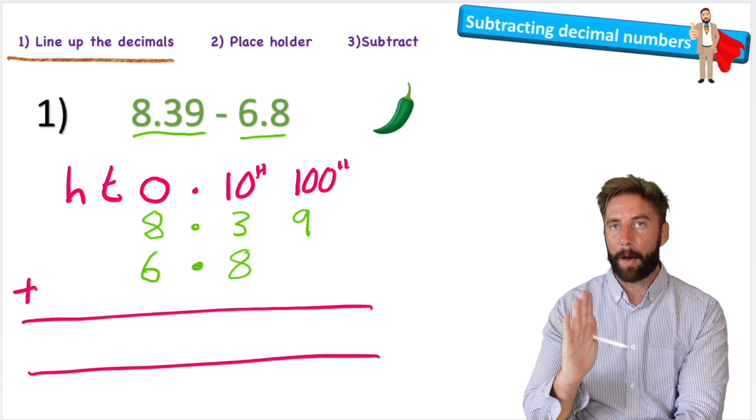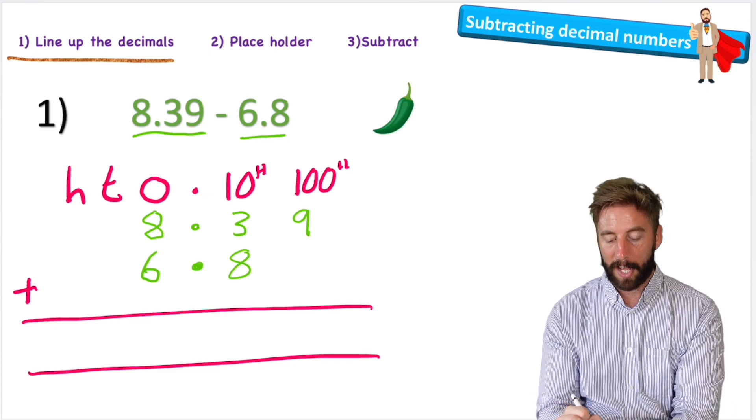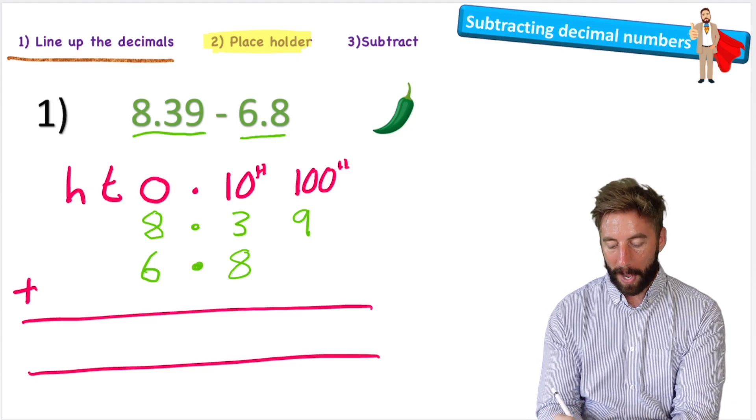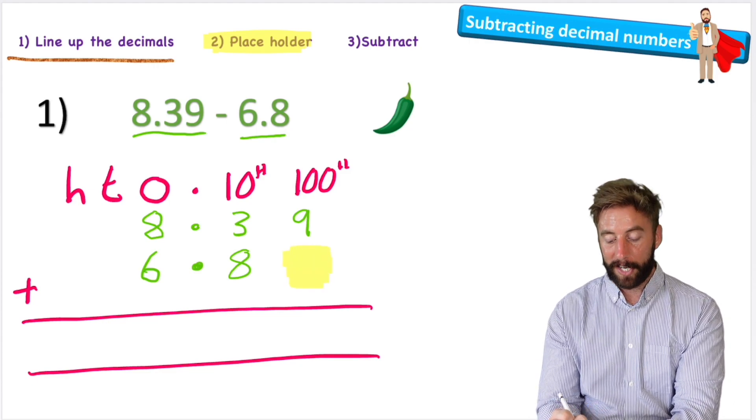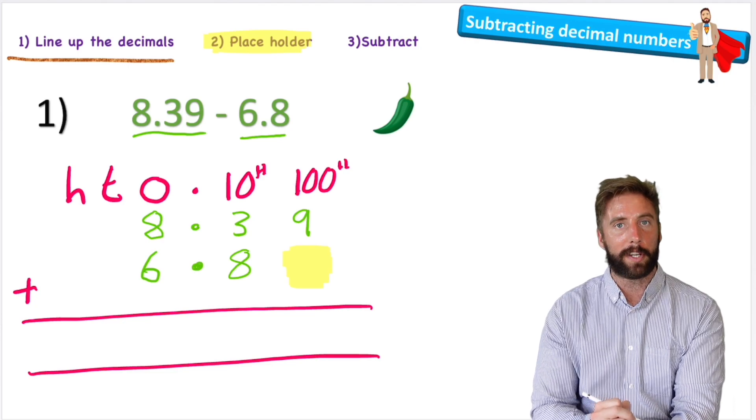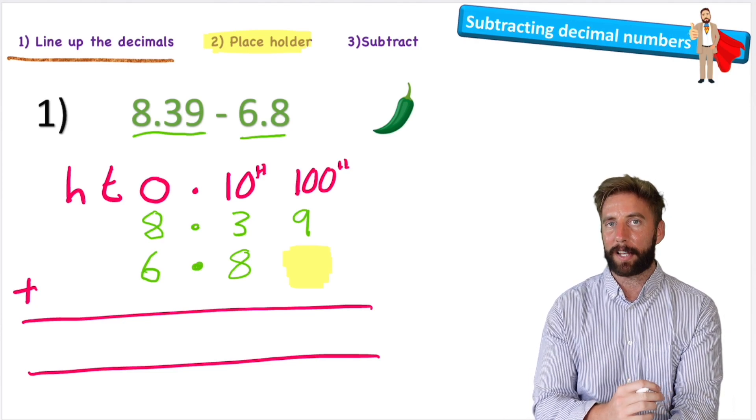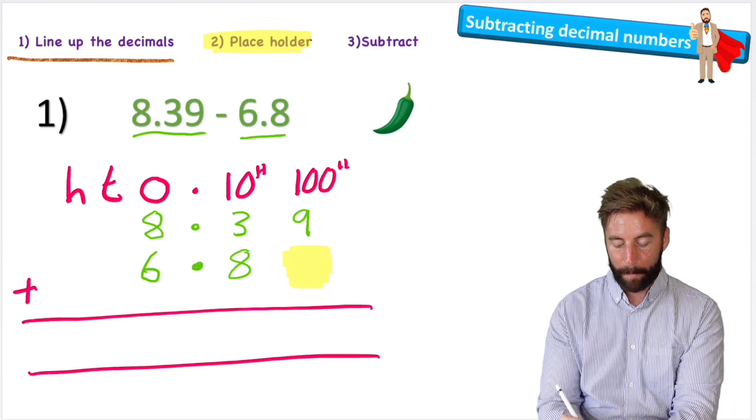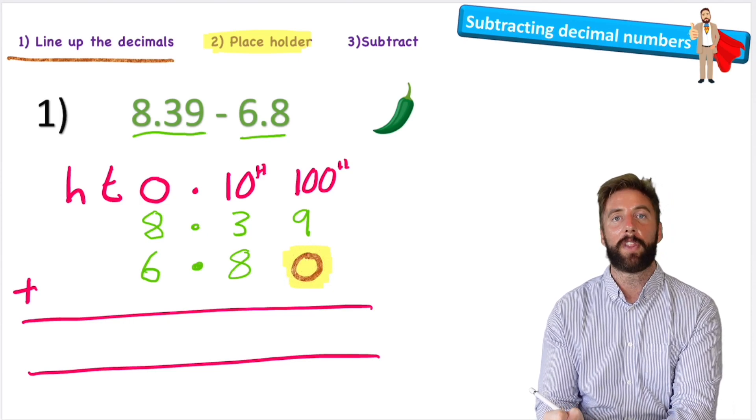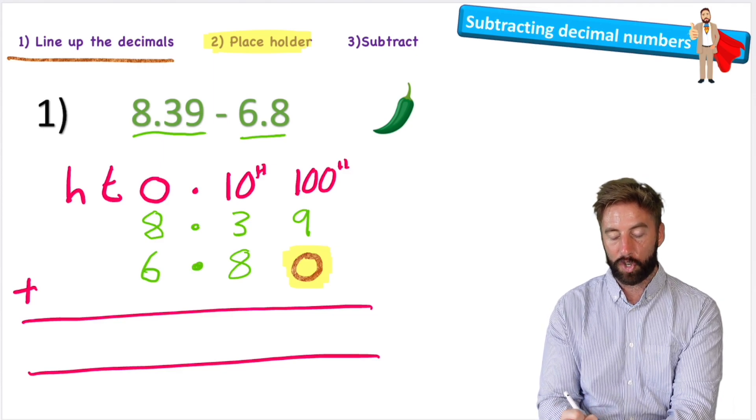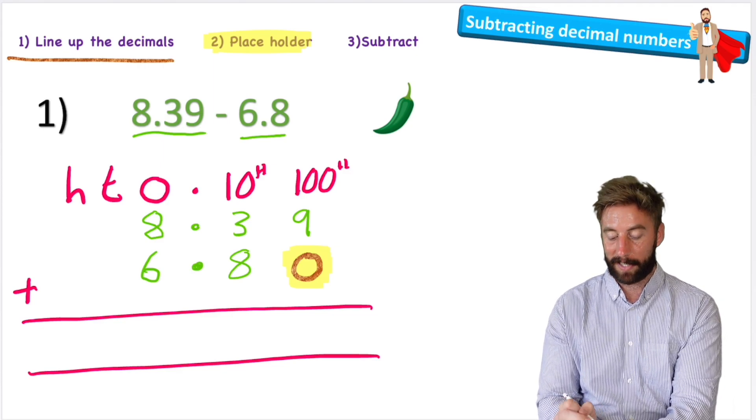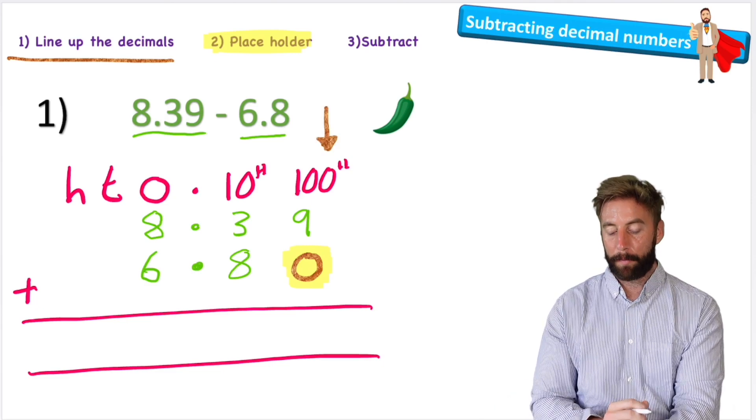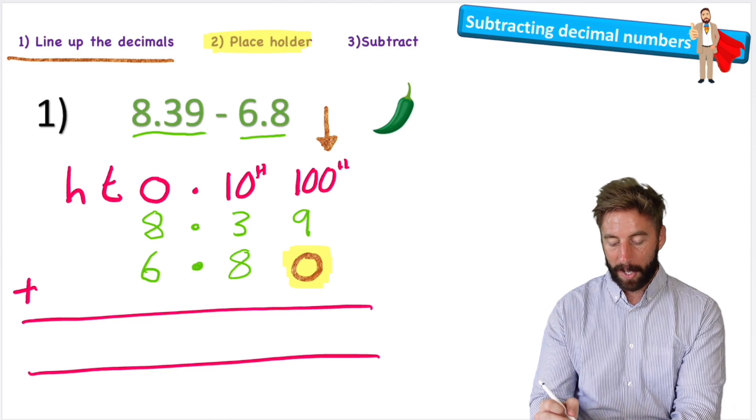But hold up, I'm not ready to start yet. Step two says placeholder, and this is really important. We have this big gap here because I have three digits in my first number and only two digits in my second number. I have to make sure I have equal amount of digits in both questions. So what can I add here instead? That's right, a placeholder: a zero that has no value. Because think about it, this zero has not changed the value of my 6.8. It's still 6.8, just looks a little different because it's 6.80 now. But it now means that my hundredths column is now complete.